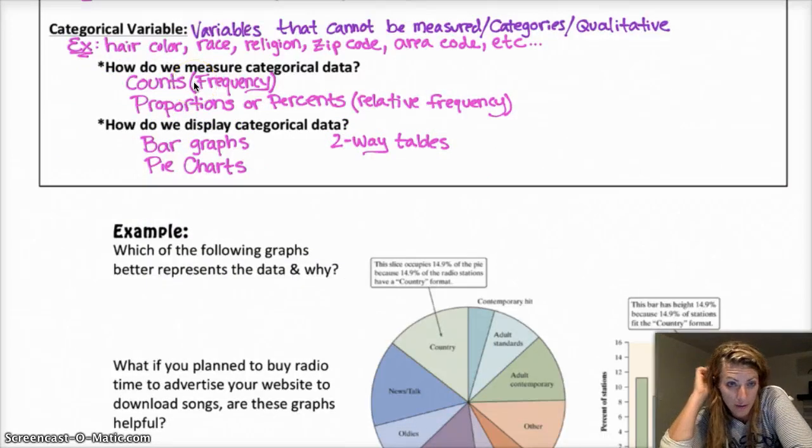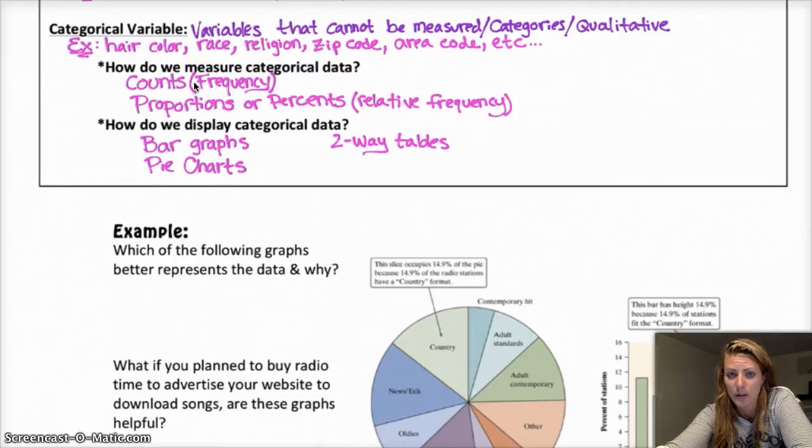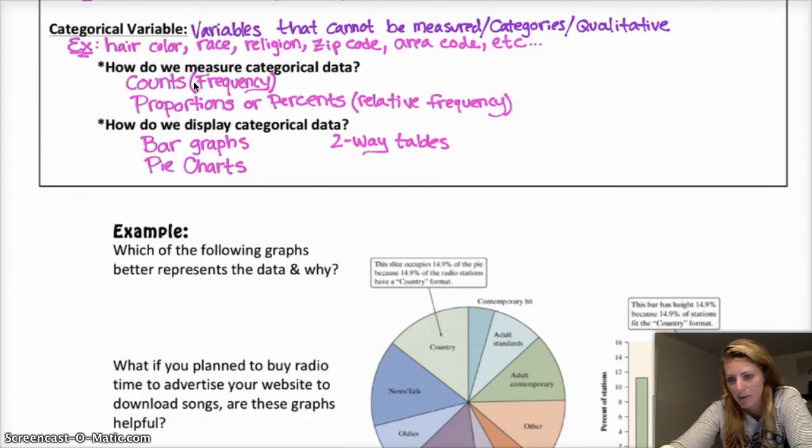Counts, which are the same thing as frequency. And basically, you might have a table that has all the different hair colors that you're looking for, and then the number of people in your study that have that type of hair color. It's kind of like a tally sheet, but instead of tallies, you actually have the counts. And then proportions or percents, which is also the same thing as relative frequency, and so you just find the percent of the total that you have. And then display with bar graphs and pie charts and two-way tables.